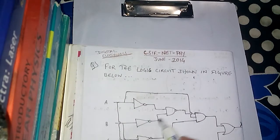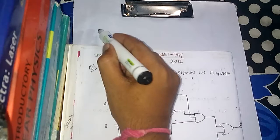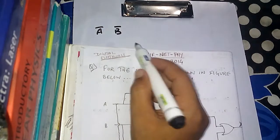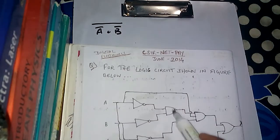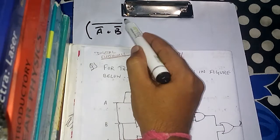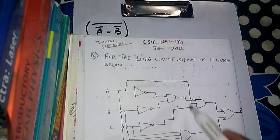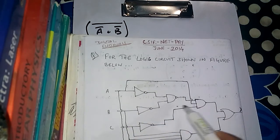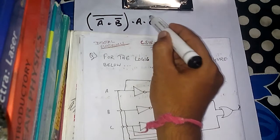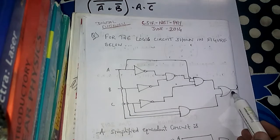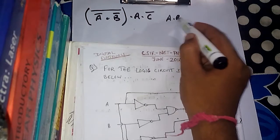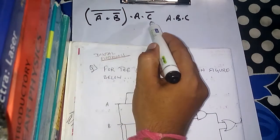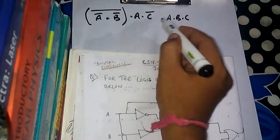First, find the Boolean expression for the given circuit. We have A-bar and B-bar going into a NAND gate — that means AND then NOT operation. This signal then goes to a NAND gate along with signal A and signal C-bar — a three-input AND gate. This whole signal then goes to an OR gate along with the signal A·B·C, and they perform OR operation.